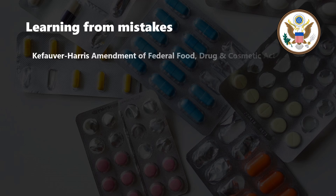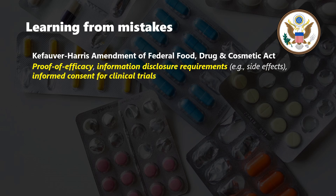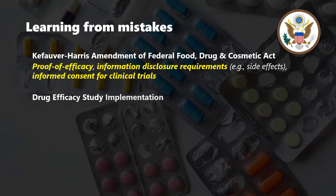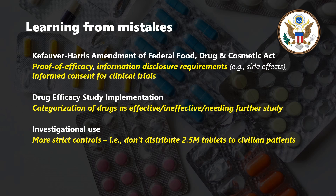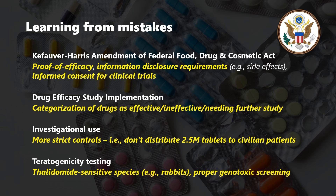What has science learned from this tragedy? Drug controls got stricter. Prior to 1962, drug developers only had to show that new drugs were safe — and as we saw, even that was not a given. A new pivotal amendment required strict proof of efficacy from well-controlled studies. Drug advertising was required to disclose accurate information about side effects, and clinical trials had to include informed consent of participants. Drug testing also became more robust, requiring use of rabbits and other thalidomide-sensitive species for teratogenicity testing.